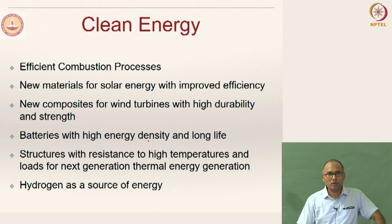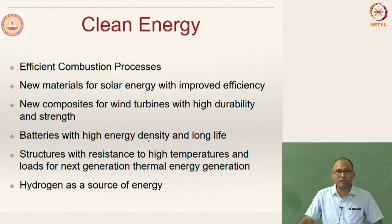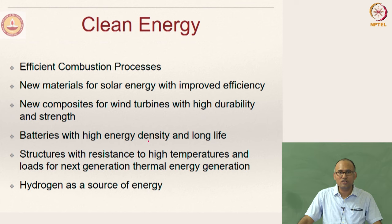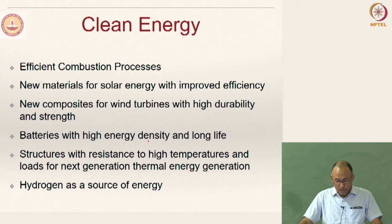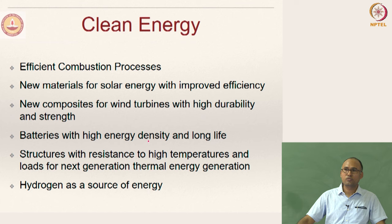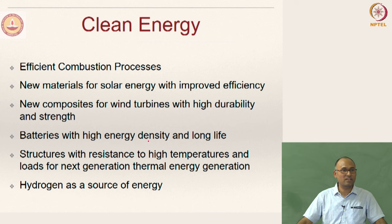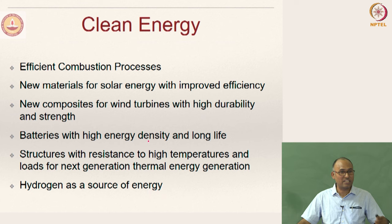Solar power plants need a lot of land area and depend on sunlight availability. But if you can come up with new materials to enhance efficiency, you can increase the fraction of solar energy in our economy. Wind turbines — the materials used for making wind turbine blades need significant improvement. There are different kinds of composites used which reduce weight while increasing blade strength. That means there is a need for new kinds of material design there.